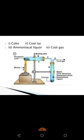In the apparatus, gases are collected in a test tube. Ammonia is present in gaseous form, and the heavier particles settle down. Coal tar and ammonia form the liquid products, while coal gas evaporates — also called town gas. Coke remains as the solid product.